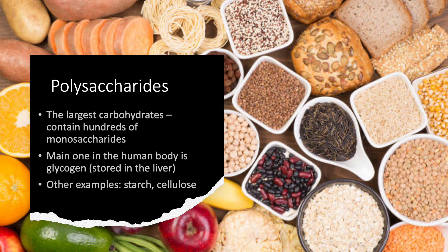Other examples of polysaccharides include starch, which is how plants store their own form of glucose — you won't find glycogen in plants, only starch, which is what we humans eat. Cellulose is also found in plants, specifically in plant cell walls. Humans cannot digest cellulose, but another term for it is fiber. Fiber adds bulk to your waste, making it easier and more frequent to excrete. That concludes the first part of macromolecules — thank you, bye!